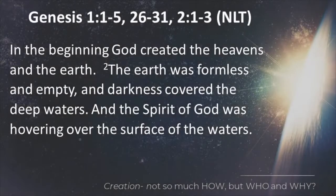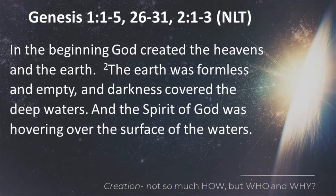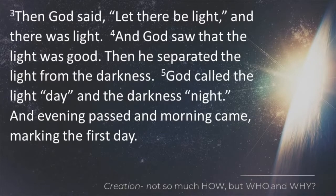Let's start at the beginning. We're going to read day one, talk about the other days, and then read day six. Genesis chapter one: 'In the beginning, God created the heavens and the earth. The earth was formless and empty, and darkness covered the deep waters. And the Spirit of God was hovering over the surface of the waters. Then God said, let there be light. And there was light. And God saw that the light was good. Then he separated the light from the darkness. And God called the light day and the darkness night. And evening passed and morning came, marking the first day.'